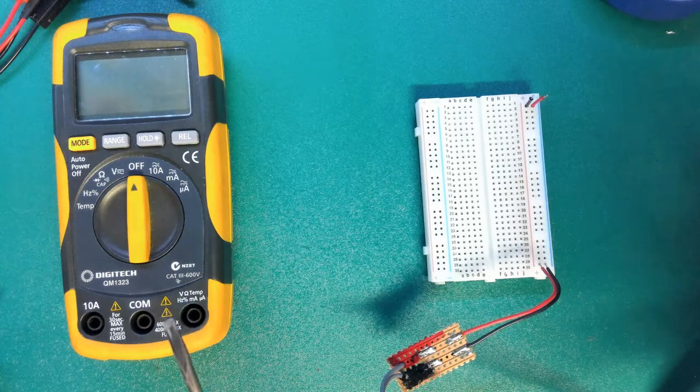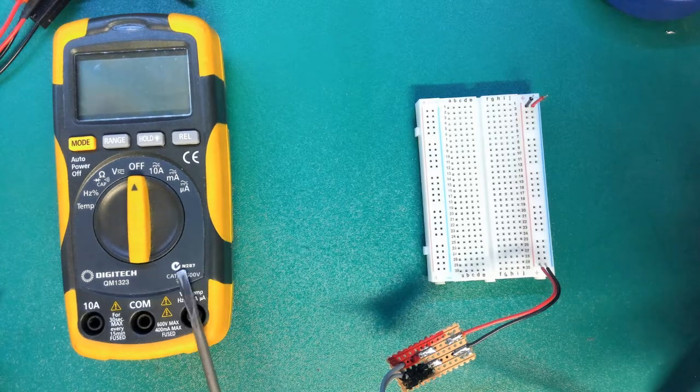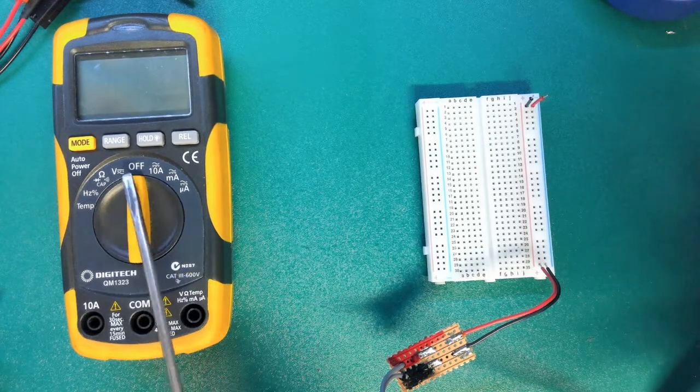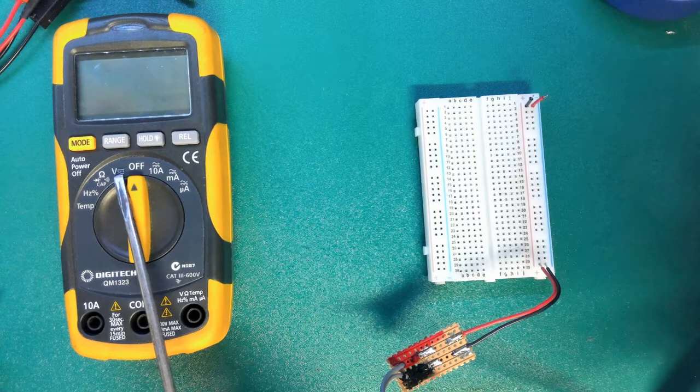In this video we're going to have a look at how to use a multimeter to measure voltage. This is an auto-ranging multimeter and it's turned off at the moment, but if we turn it to the voltage selection option we'll be able to start measuring voltage.